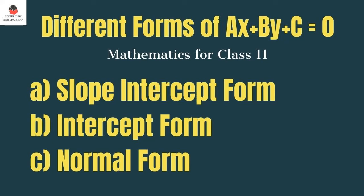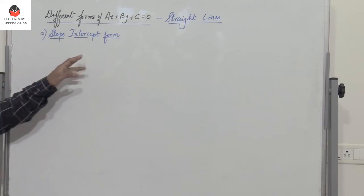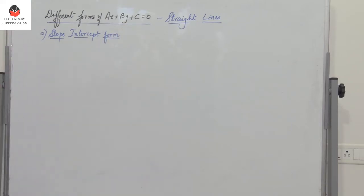Let us discuss all the different forms of AX plus BY plus C equal to 0. This is a topic which comes under the chapter Straight Lines. We have three different cases. Let's begin with slope intercept form.